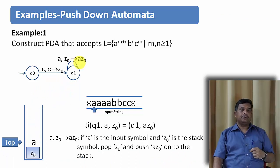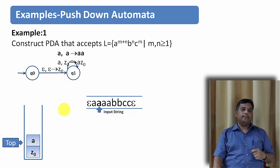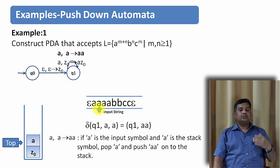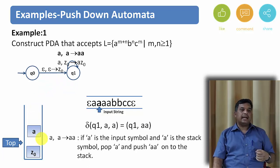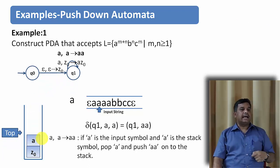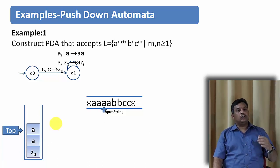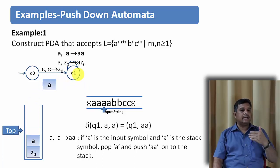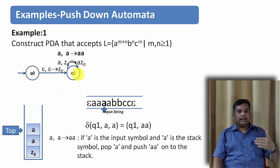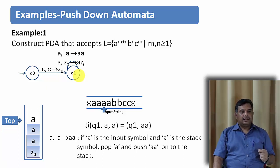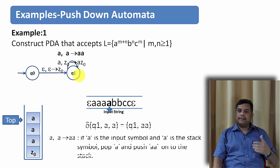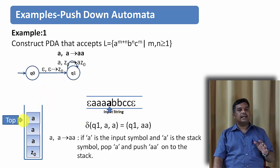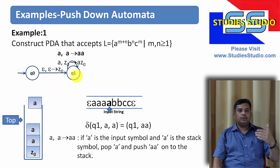The next symbol is another a. Now a is on top of the stack and a is the input symbol, so we want to push a onto the stack: pop the top a, push it back, then push the input a. This same operation repeats for each subsequent a — we remain in state q1, pop the top a, push it back, and push the new input a. After all a's are processed, all a's are on the stack.